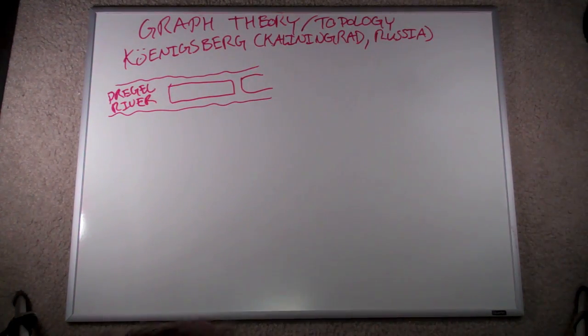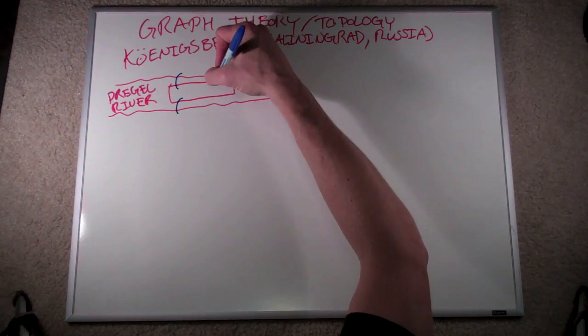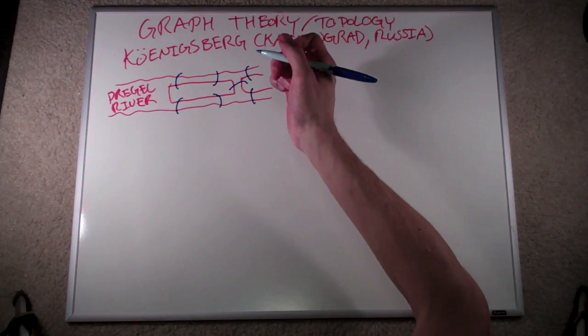If we go back in time a couple hundred years, these two islands are connected to the shore on either side via one, two, three, four, five, six bridges, and a seventh that connects the two islands together.